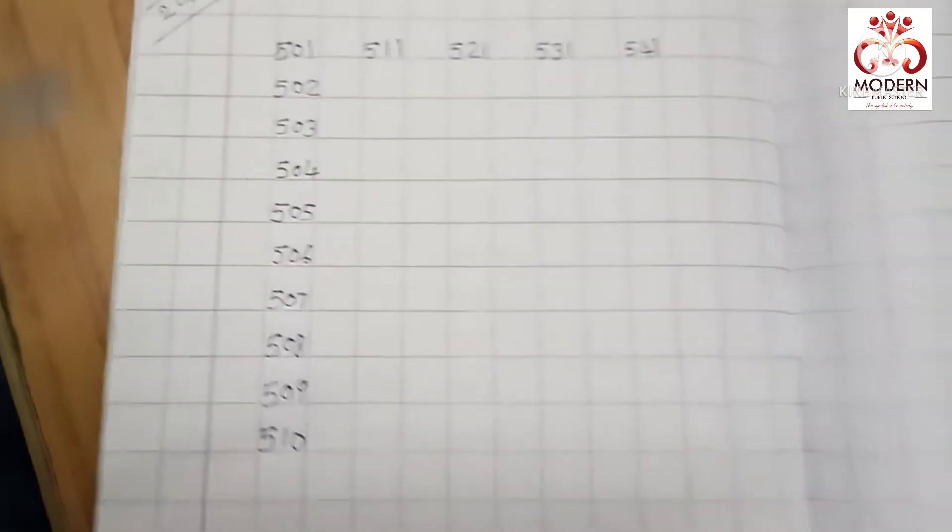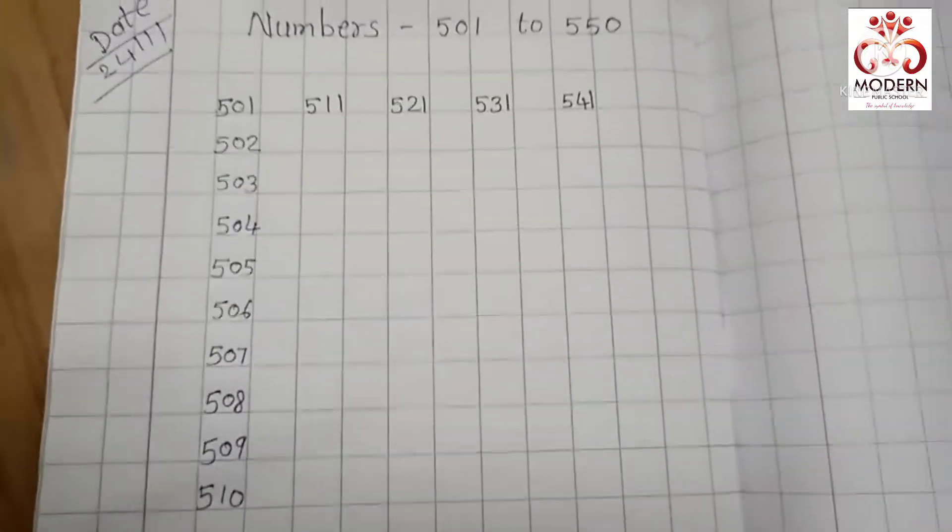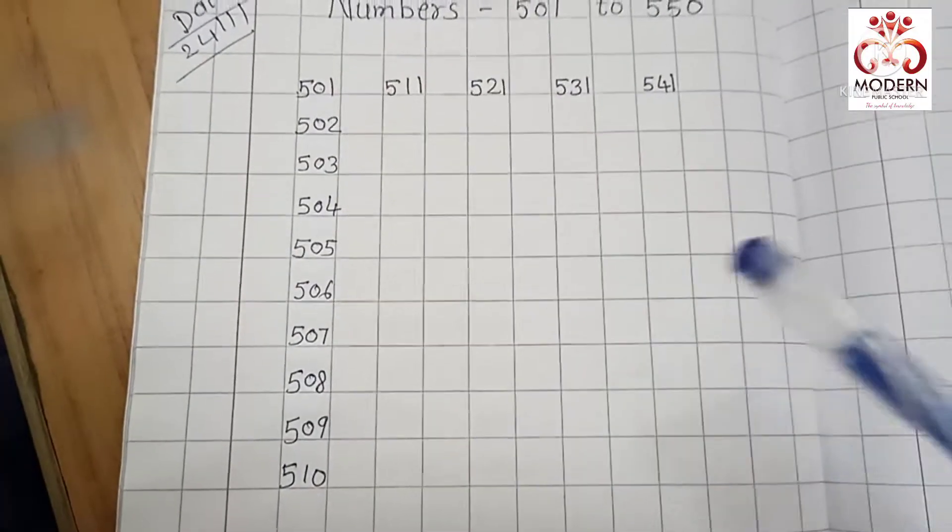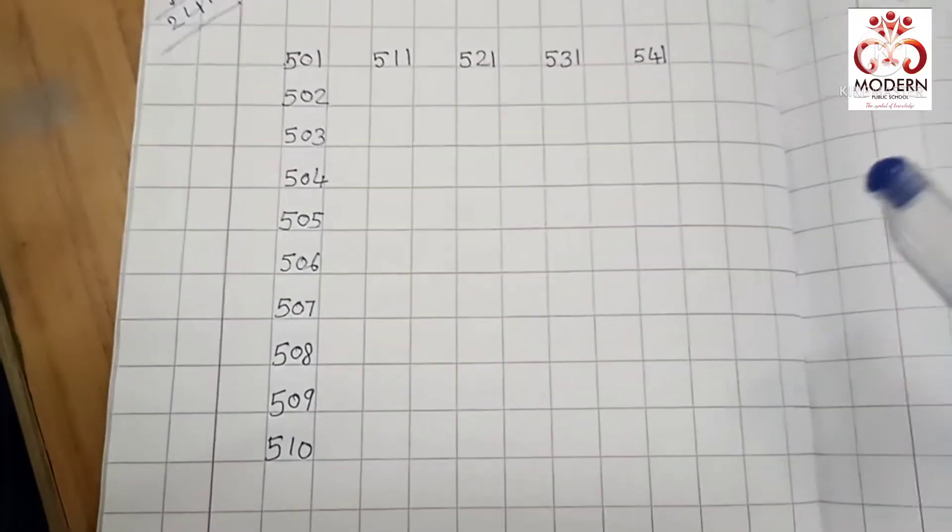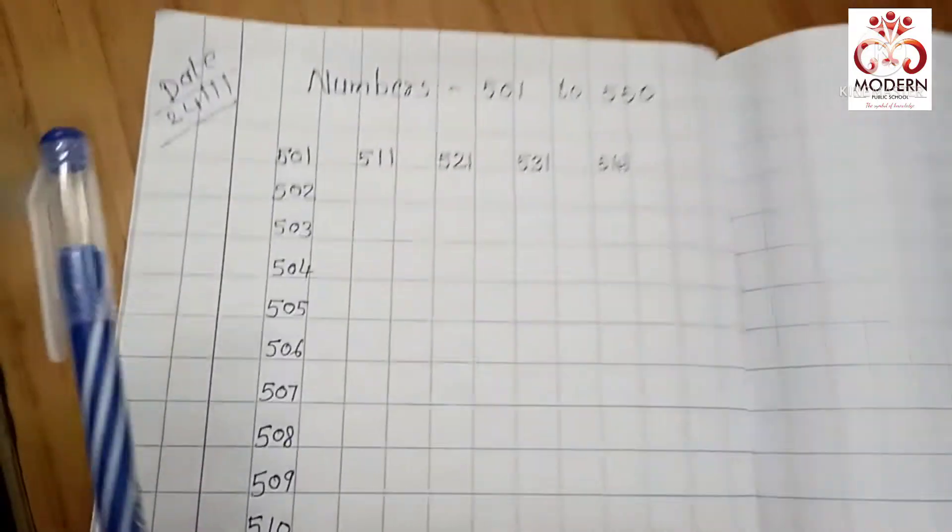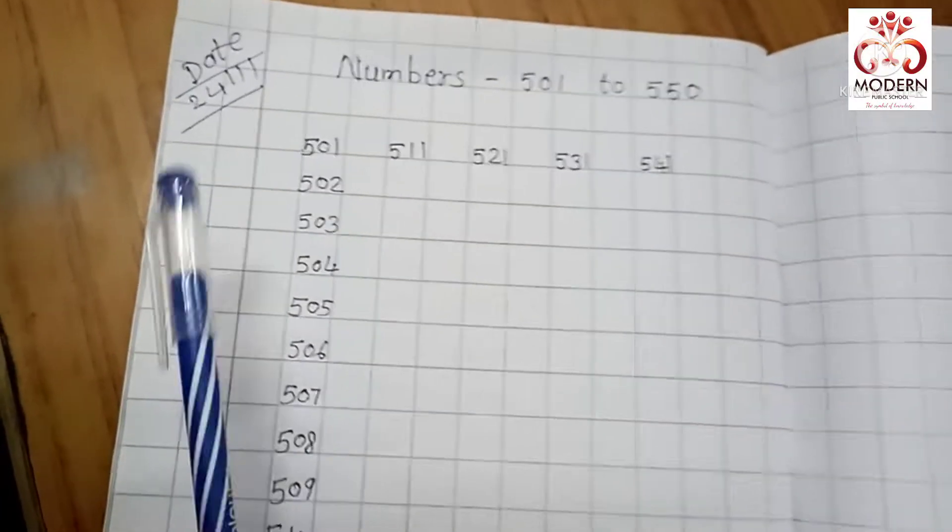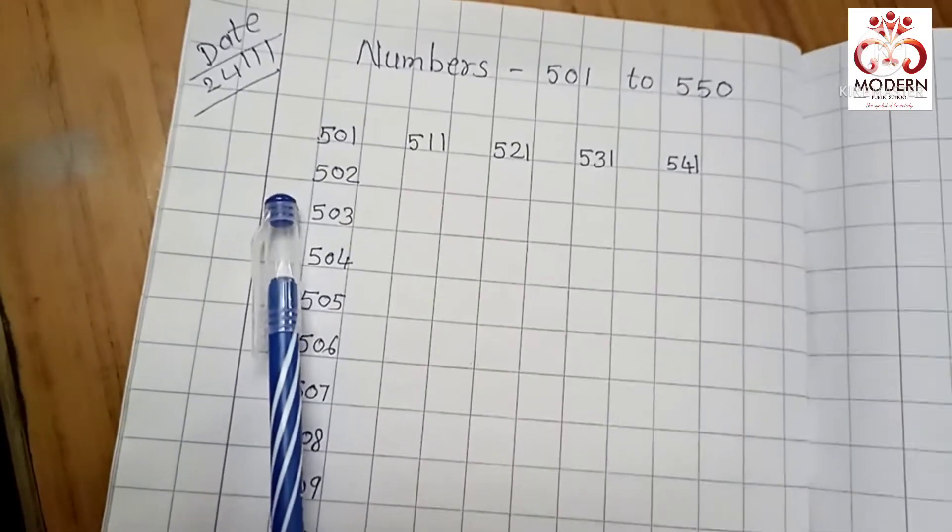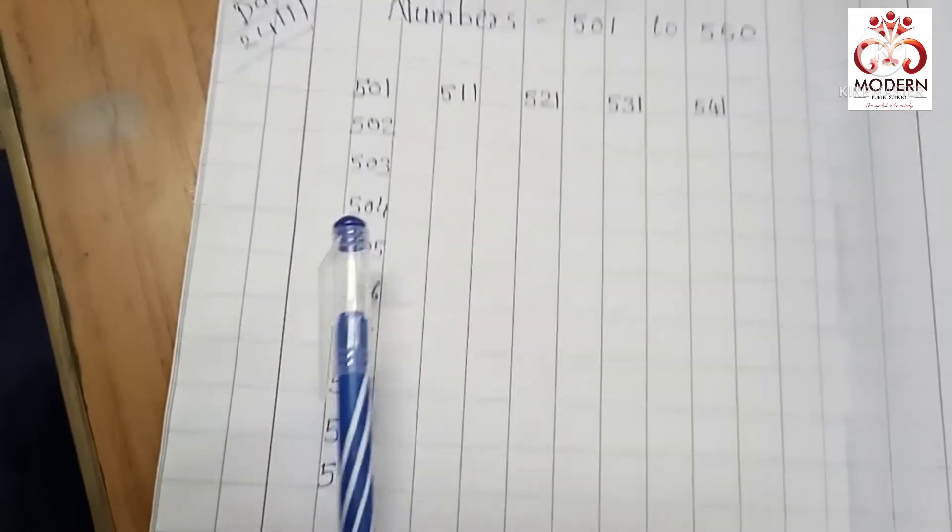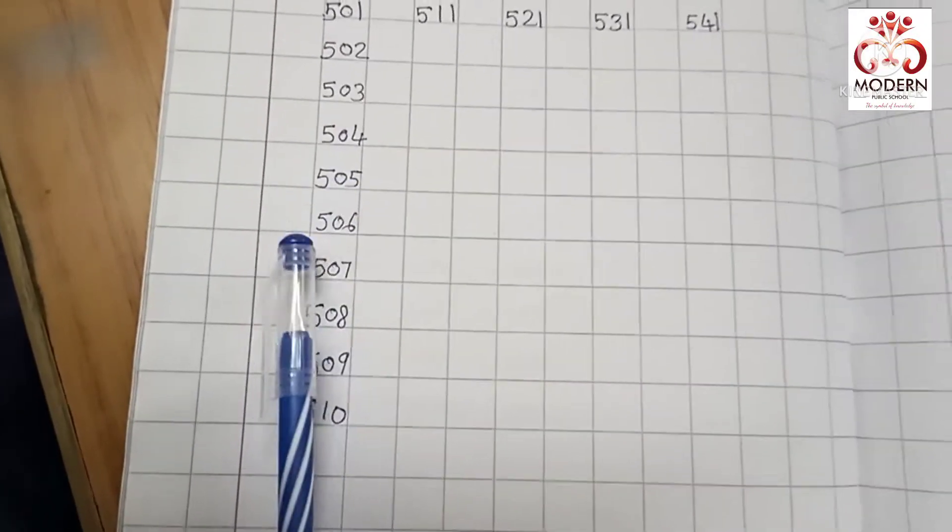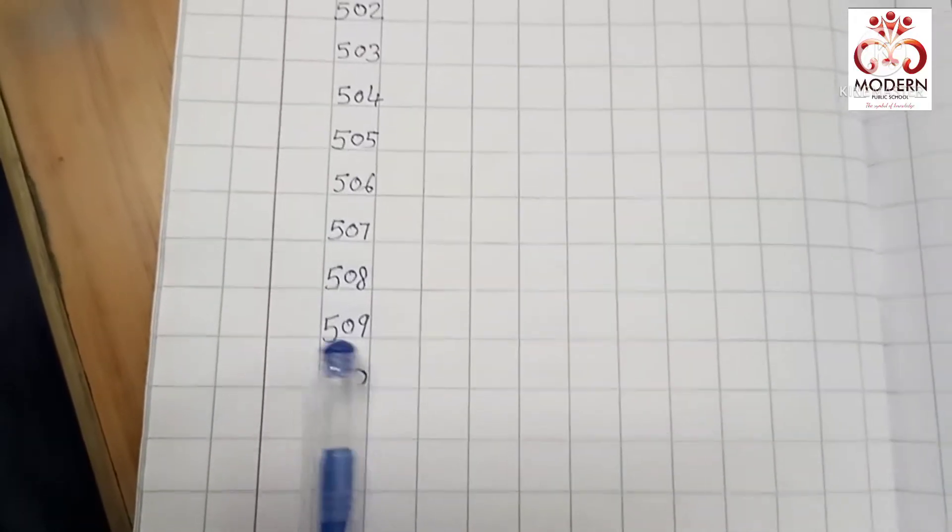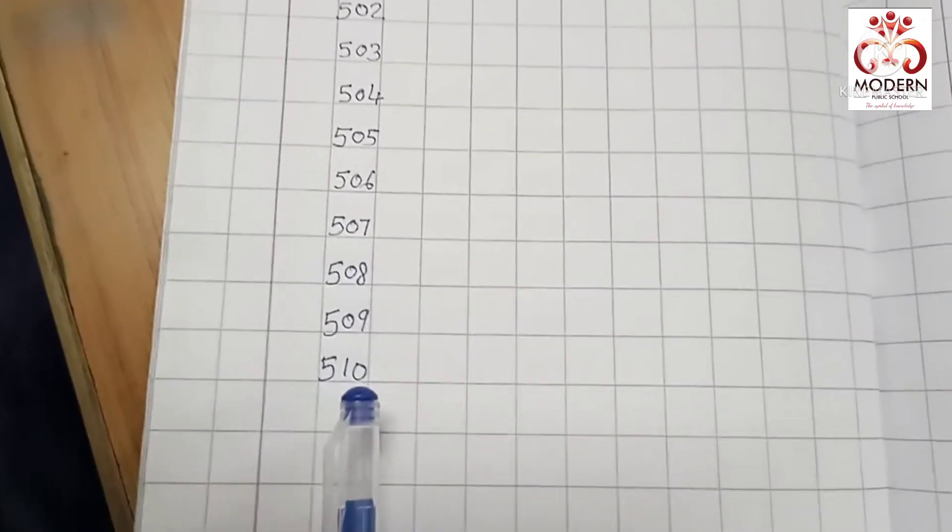So students, have you noticed how I read these numbers? Yes, look 1 to 100 you already know how to write and how to read. Yes, am I right? Yes. So just add in front of 509. 501, 502, 503, 504, 505, 506, 507, 508, 509, 510.